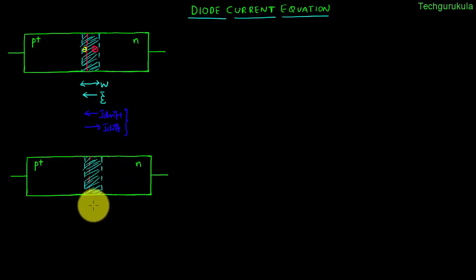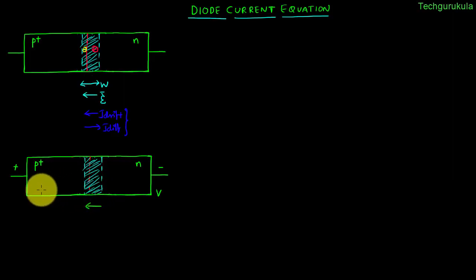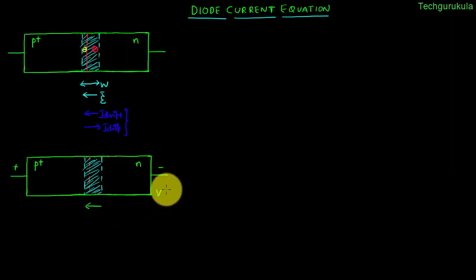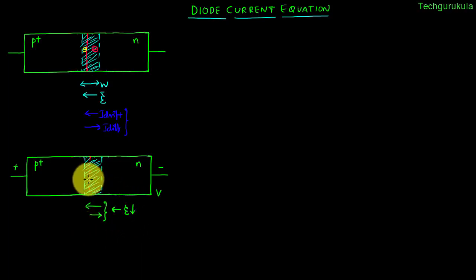Let me take the same p-n junction with the electric field in this direction. Now let us apply a potential difference v across this p-n junction. I will also assume that the potential we are applying is directly applied across the junction, which means I am neglecting the potential drops across the neutral p-region and neutral n-region. The electric field because of this potential would be in the opposite direction, so the net electric field would be in the same direction as in the equilibrium case, but the magnitude of the electric field would have reduced, because of which the depletion width would also decrease.